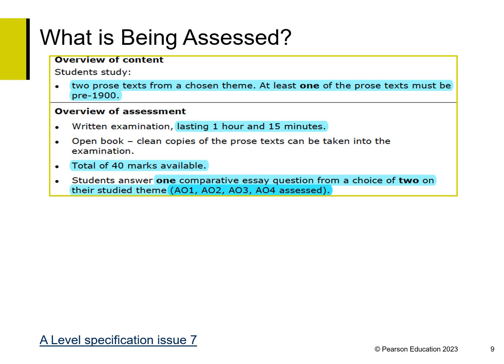Paper 2 focuses on Prose and is a written exam lasting 1 hour and 15 minutes. Students compare two prose texts from a chosen theme and at least one of the prose texts must be pre-1900. Students answer one comparative essay from a choice of two on their studied theme and the total number of marks available is 40. The question assesses AO1, AO2, AO3 and AO4.